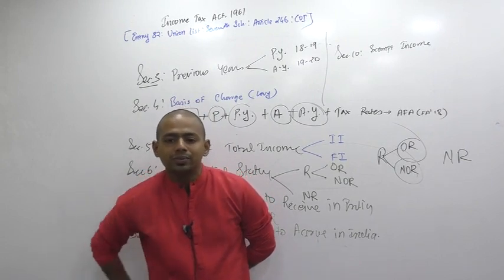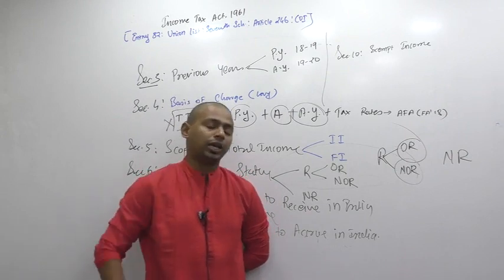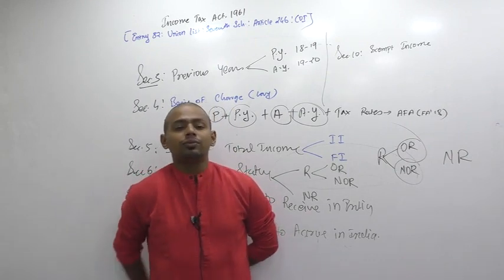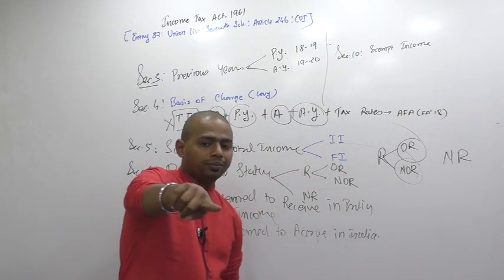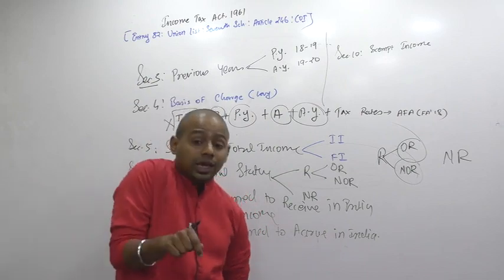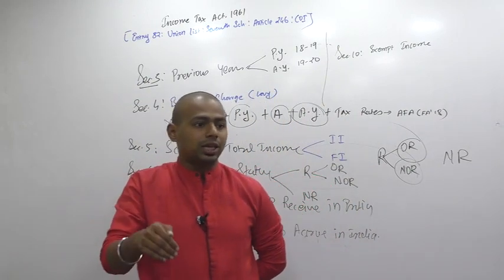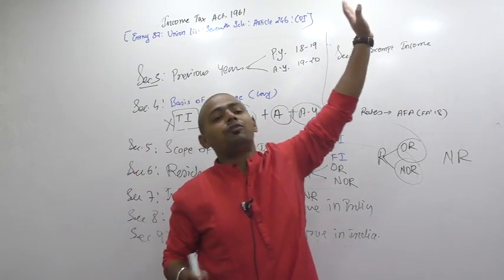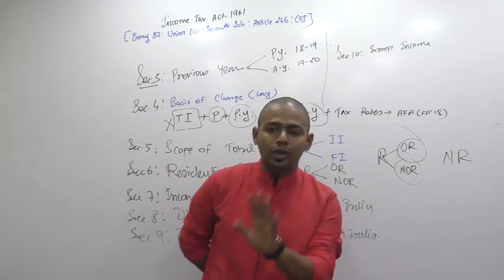But you know, like regular language, we call it charging section, main section, powerful section, levy section, triggering section. Okay. Trigger is on what? If you want total income. Earn by? Person. Person. Person. In previous year. Shall assess. In assessment year. At tax rates given in annual finance act. And which finance act is applicable to us? Finance act 2018.